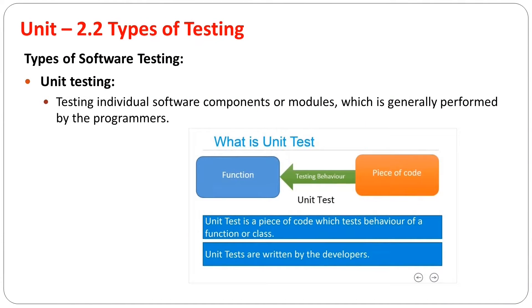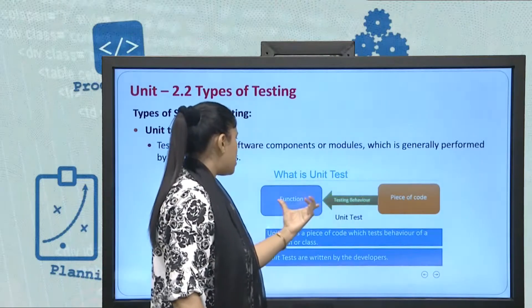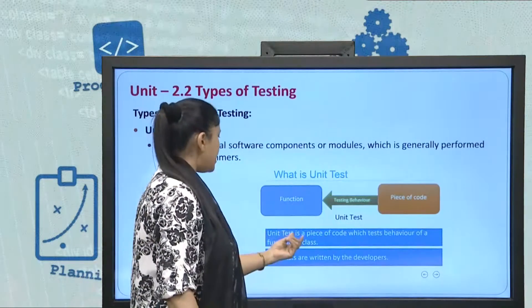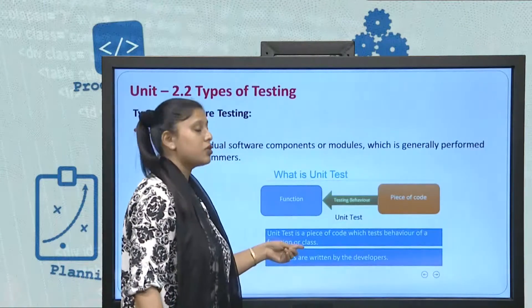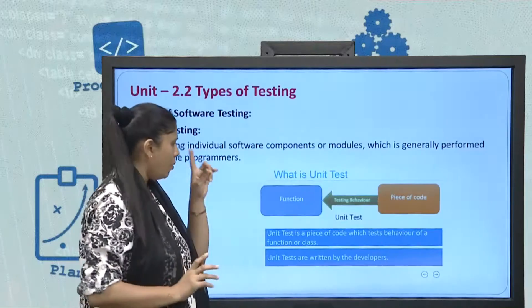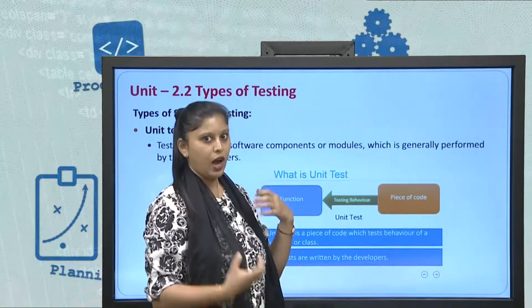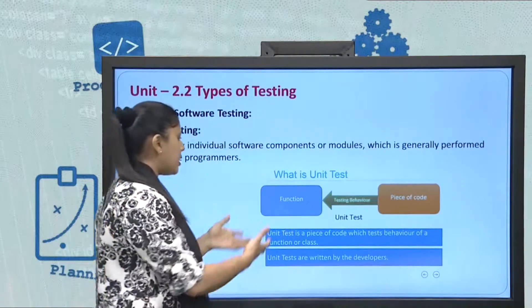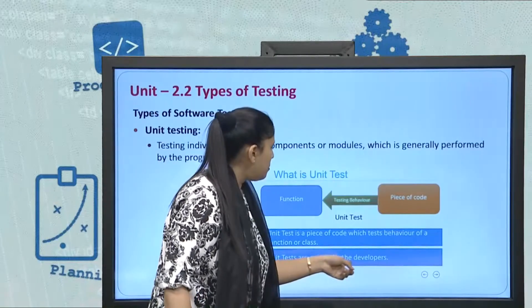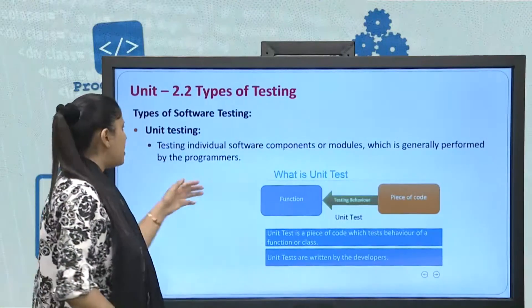In the diagram, a piece of code is taken — which can be an entire module or some software components — and its testing behavior is checked for its functionality. A unit test is a piece of code that tests the behavior of a function or a class. A particular function, class, or module is checked for its behavior: what input is given and what output is gained from that class or module. Unit tests are generally written and run by the developers who write the code.